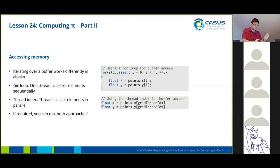You just iterate the points one by one. In APAKA you use the thread index without encapsulating this in a for loop, and because the threads work in parallel, the elements are also accessed one by one. However, if required for your algorithm to have multiple elements accessed by a thread, you can also mix both approaches. You can build in a for loop in your kernel.